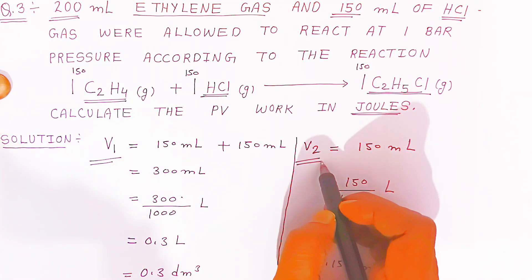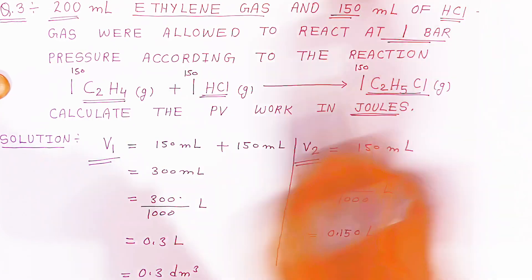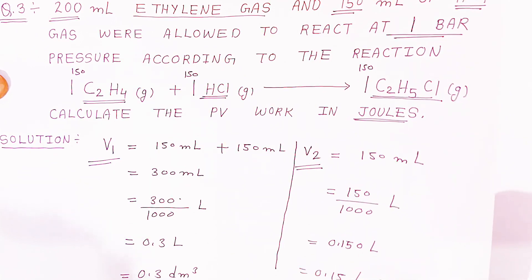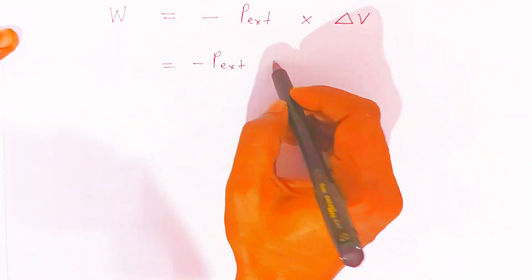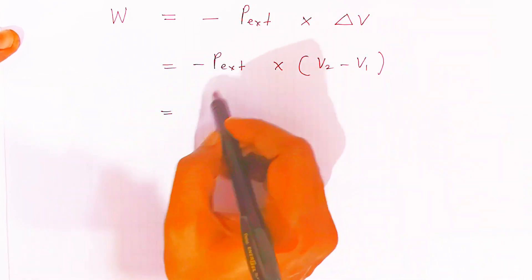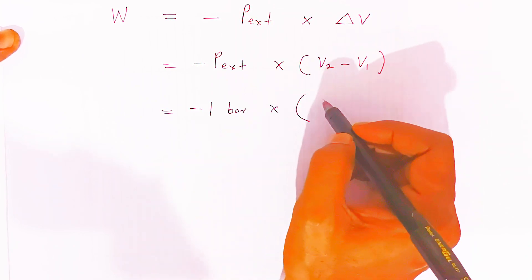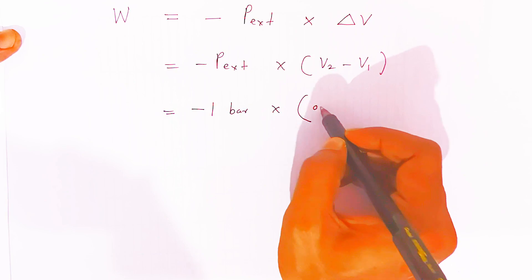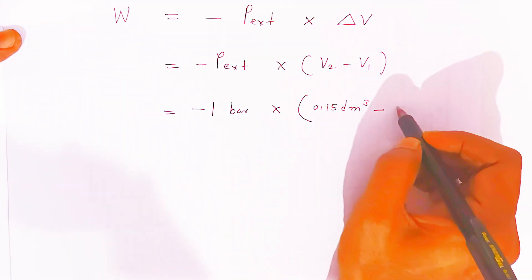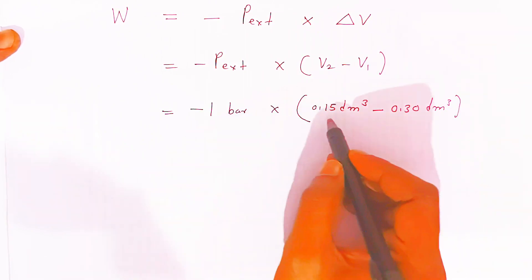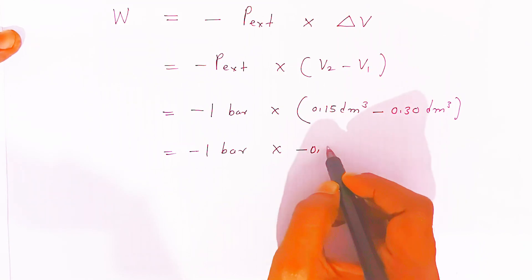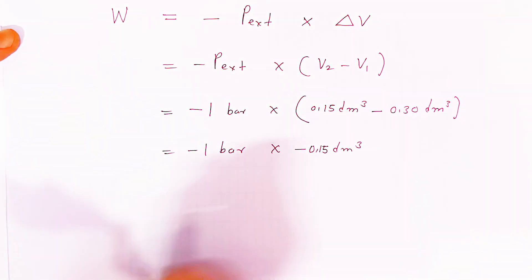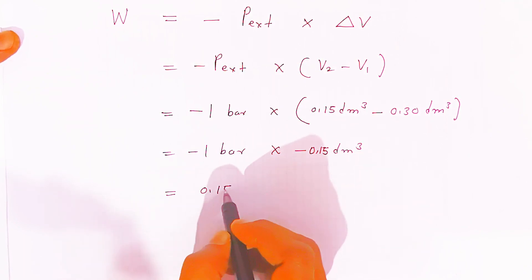Now you know the initial volume and the final volume, and you know the external pressure P_external is given. The formula for work done is W = −P_external × ΔV, which is −P_external × (V2 − V1). Substituting: −1 bar × (0.15 dm³ − 0.30 dm³). Since V1 is bigger, the bracket gives −0.15 dm³, and negative times negative gives positive, so you get 0.15 dm³·bar.